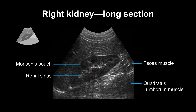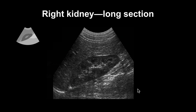Here it is on ultrasound. We see the thin echogenic line between the dorsal border of the right liver lobe and the right kidney forming the Morrison's pouch. We see the echogenic renal sinus here, and the psoas and quadratus lumborum muscles.